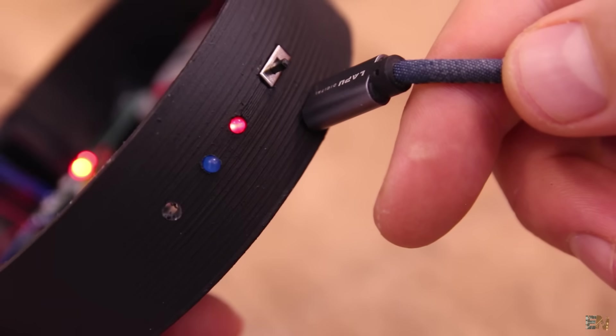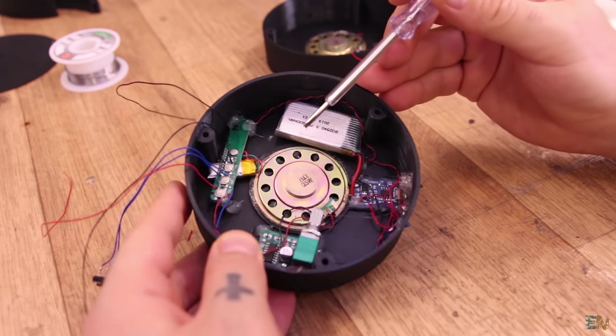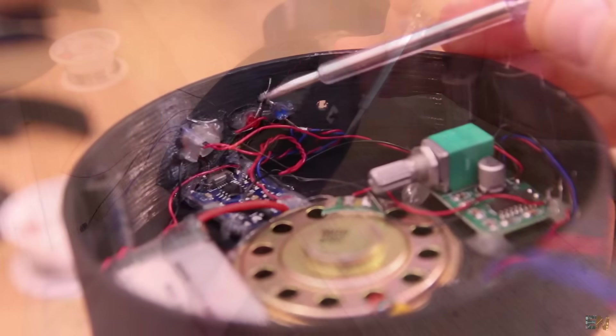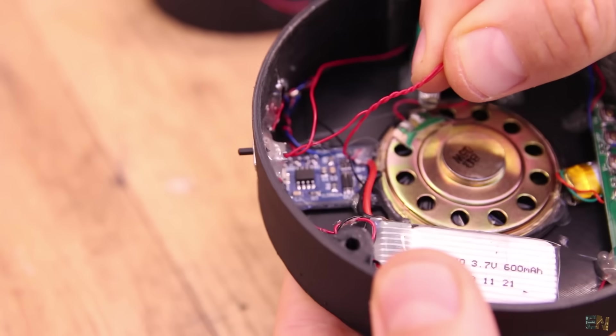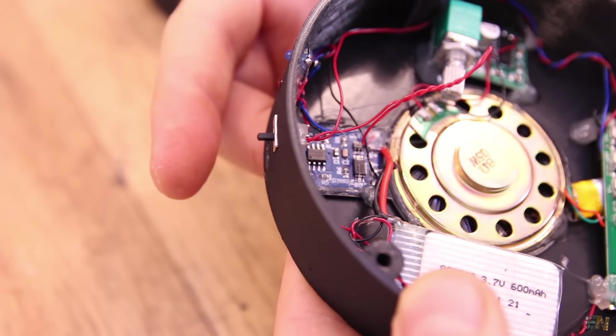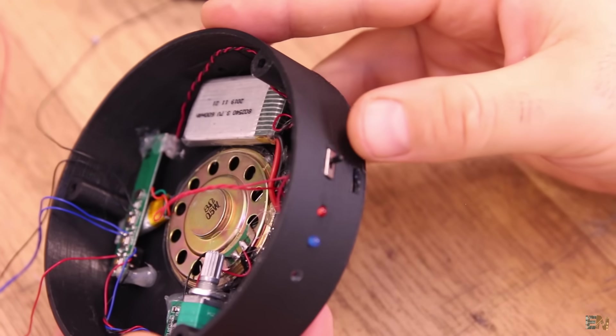So now using some hot glue, we place the battery and the charger inside of the right case. We have a hole for the USB connector of the charger. We also glue the charging LEDs on the exterior of the case. From the USB charger output pads, connect the positive output to the sliding switch. And from this switch to another red wire.